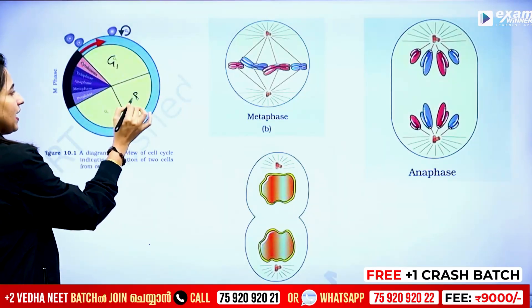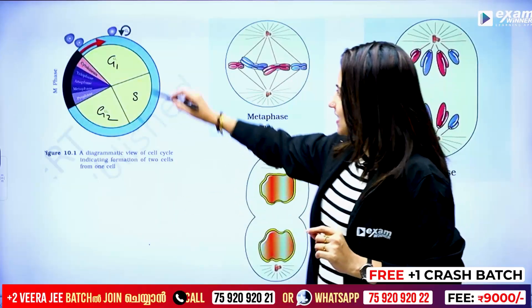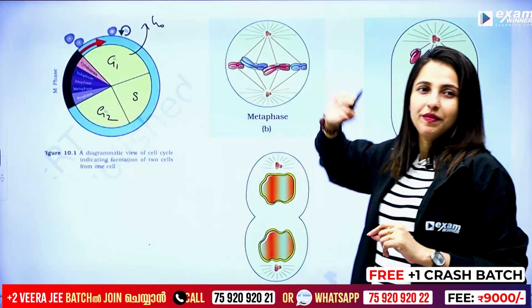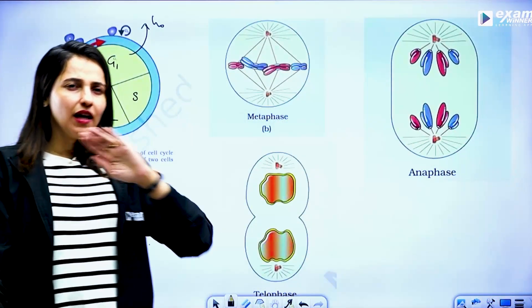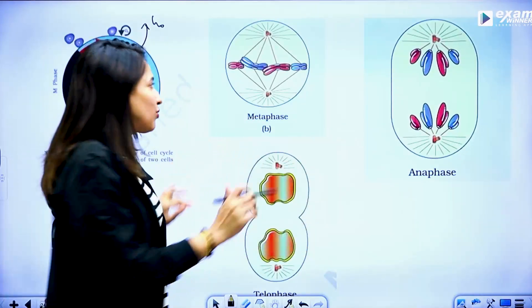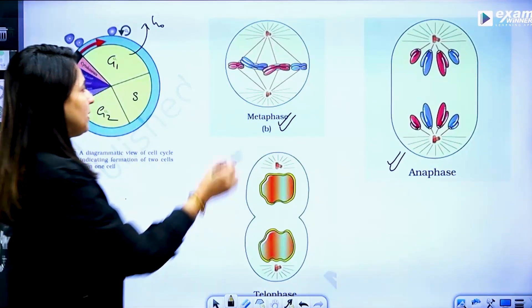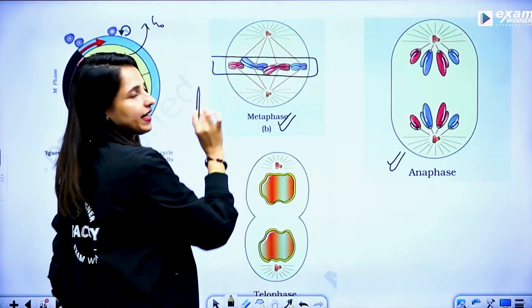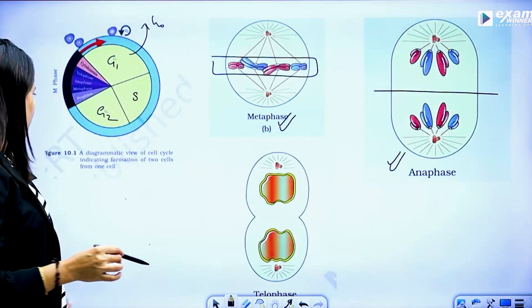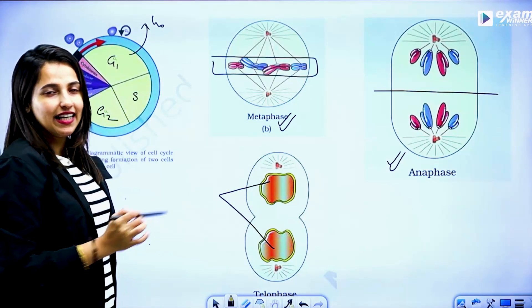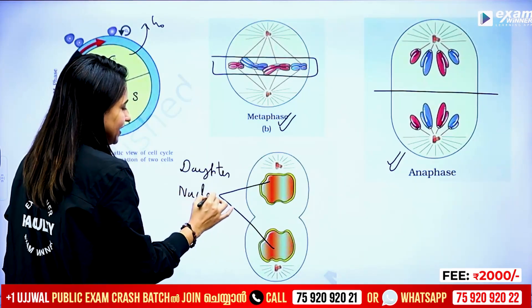G1, S, G2 — identify G2 features. G1 exits to G0. Metaphase, Anaphase, Telophase. In metaphase and anaphase, this is the assembly line. Anaphase — the two daughter nuclei are ready. Daughter nuclei is ready. This is the T phase.